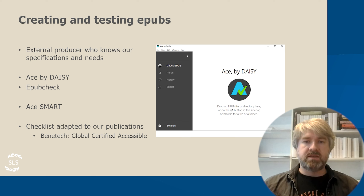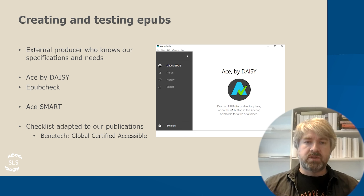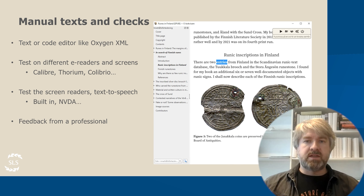The reports generated by ACE can be loaded into SMART, which then guides you through the manual testing process. I've also built up a checklist that's specific to our publications that I go through. A big part of it comes from the feedback we received from Benetech. In 2023, we qualified for their Global Certified Accessible Certificate, which is renewed yearly by submitting an ePub for evaluation. They then basically list what you are required to remediate, what they recommend you to correct, and also suggested best practices. I like to open the ePub in a text or code editor, like Oxygen XML, and work my way through the separate files, manually editing in missing metadata, correcting the code, ARIA labels, and so on.